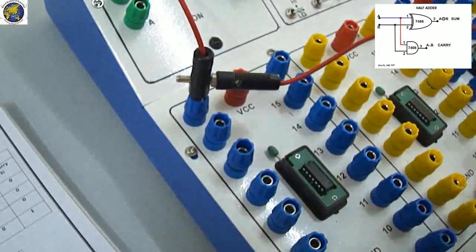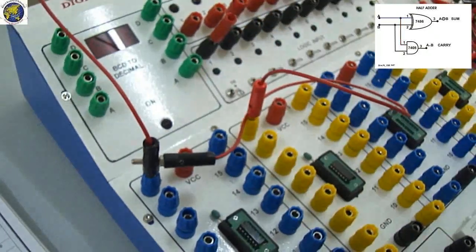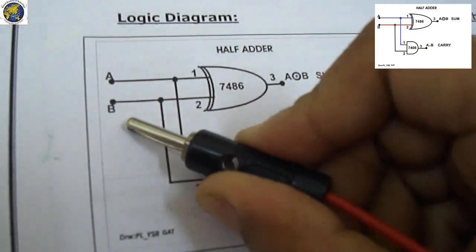Next, 7486 pin number 2 is connected to B, second input.